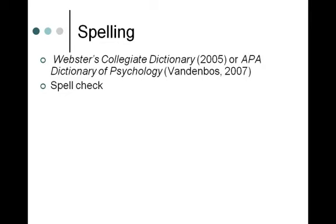For example, if you're standing on top of a mountain and you can see 'four miles,' but you meant 'for miles' — spell check would say you spelled it right, but you used the wrong word. Spell check won't catch things you misspell that way, or if auto-correct changes you to the wrong word. So listen to spell check, but it's not omniscient.